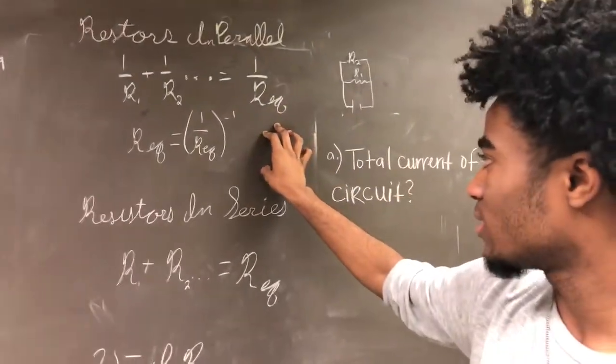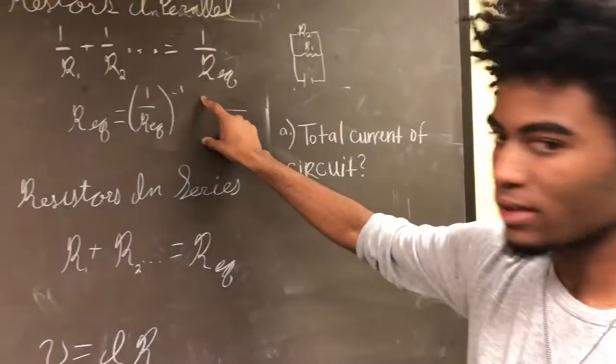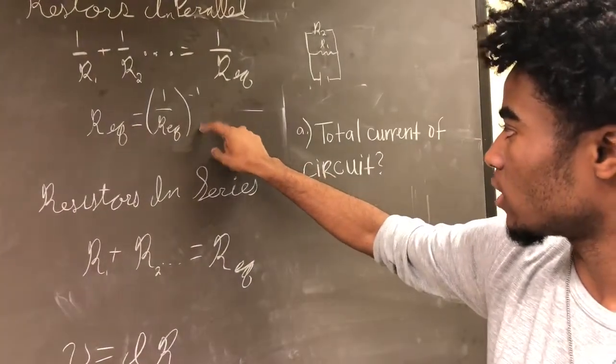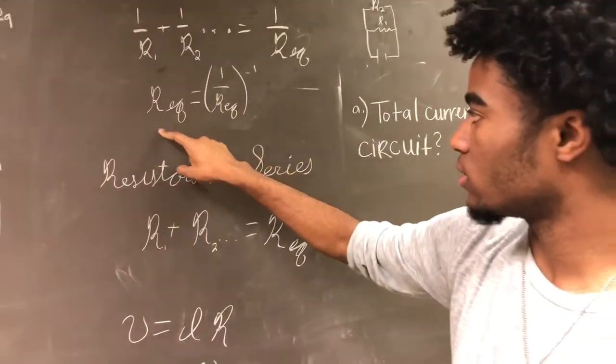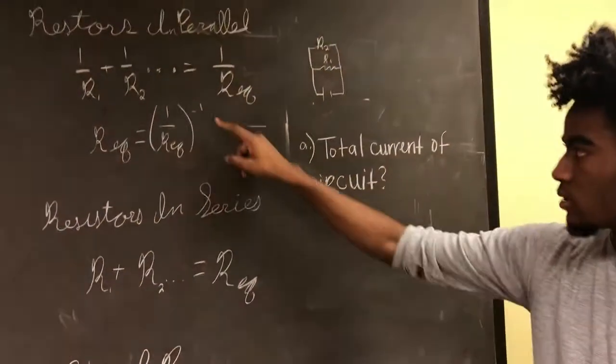But in order to get R, you have to do the inverse of R equivalent, so then that will get you R equivalent by itself, so that's R to the negative one.